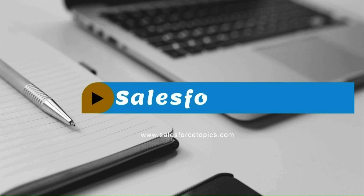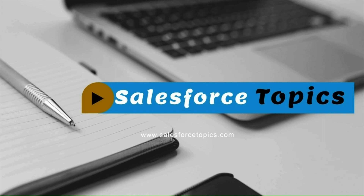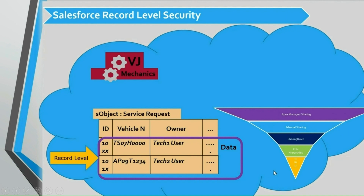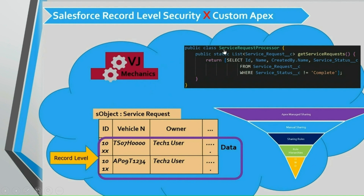Welcome to Salesforce Topics Journal. In this video, let us discuss the effect of Apex sharing modes on record sharing settings. As we know, record level sharing can be configured using OWD, role hierarchy, sharing rules, manual sharing, or Apex managed sharing. We have already covered those techniques in earlier sessions. Here we have a custom Apex class with one method, get service request, which has a simple SOQL query to return the list of records available under the service request object.